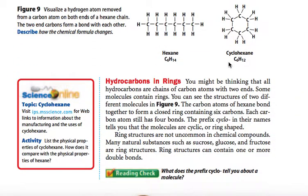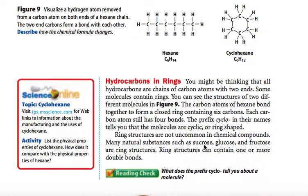Not all hydrocarbons are just chains. Some molecules contain rings. The carbon atoms of cyclohexane bond together to form a closed ring containing six carbons, where each carbon atom still has four bonds. The prefix 'cyclo' in their names tells you that the molecules are cyclical or ring-shaped. Instead of bonding to hydrogen each time, the carbons bond to themselves, forming this ring shape, which makes the structure very strong. Many natural substances such as sucrose, glucose, and fructose are ring structures — those are different types of sugars. Ring structures can also contain one or more double bonds.